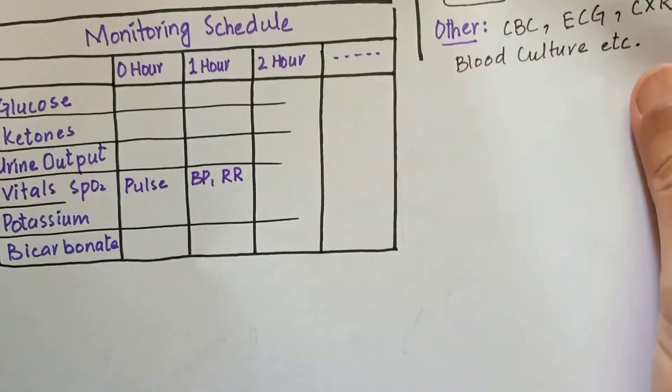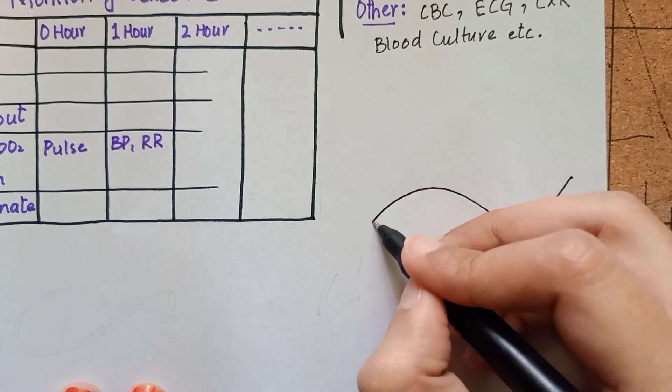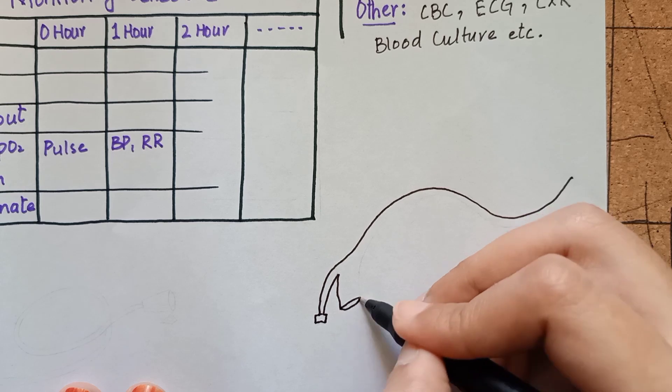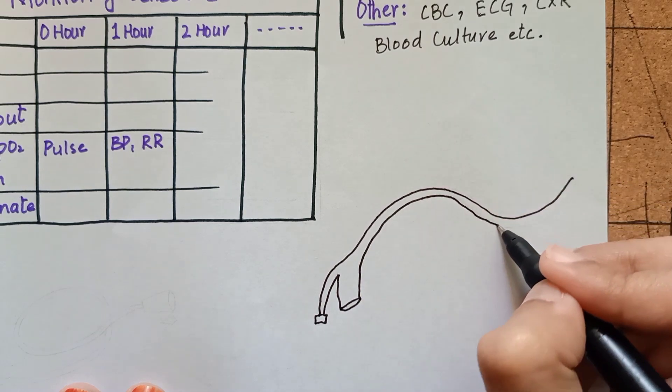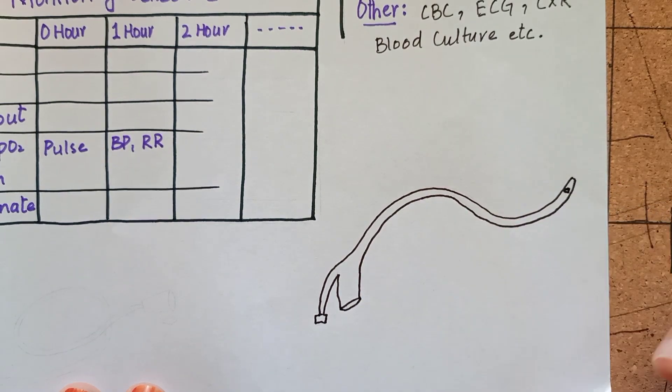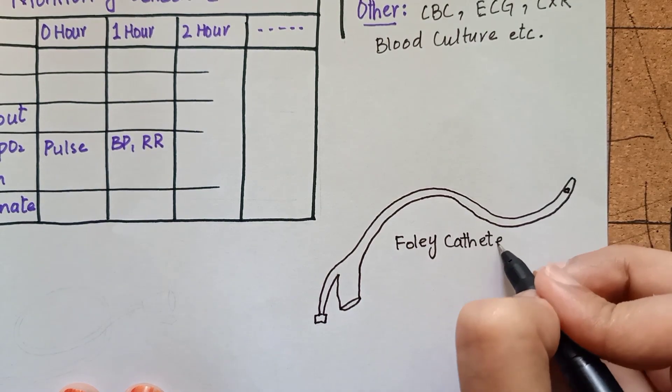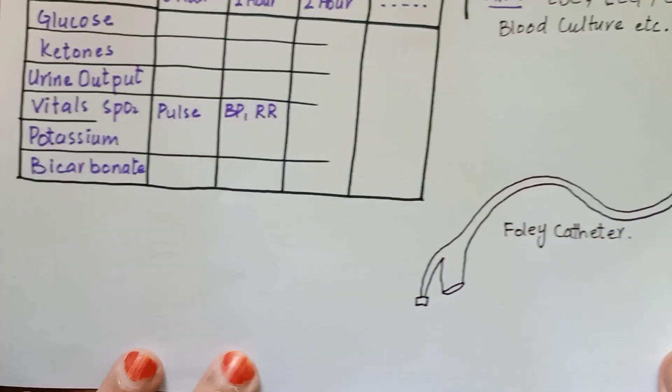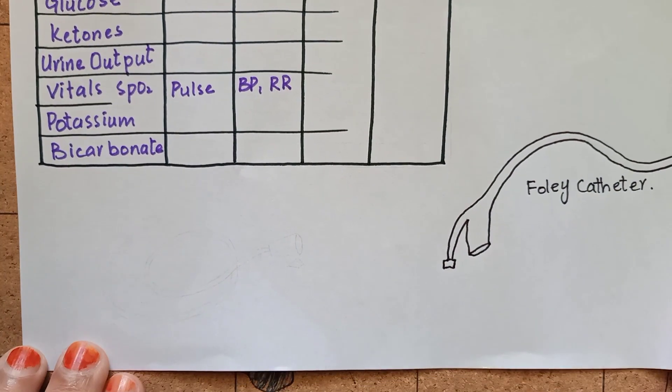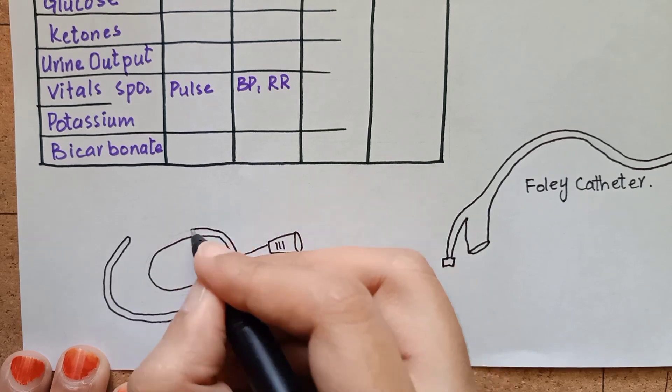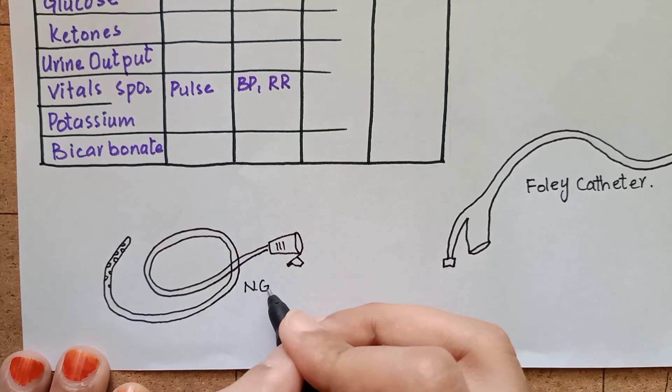There are some important points that I would like to mention here. During management, consider urinary catheterization if patient is enuretic for three hours or there is urinary incontinence or if patient is unconscious. Also consider nasogastric intubation if there is persistent vomiting or drowsiness.